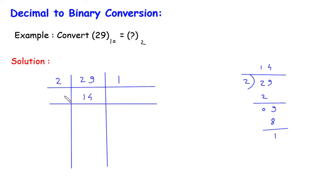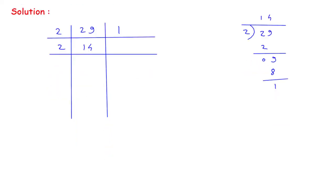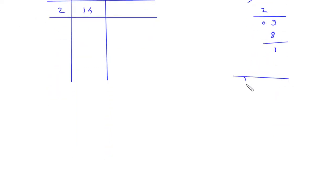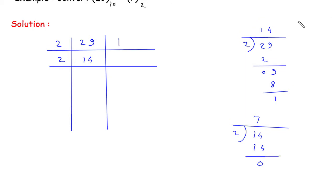And again we will divide this by 2. So this will be 14 divided by 2, the remainder is 0. So we will write this 0 here and this 7 here.